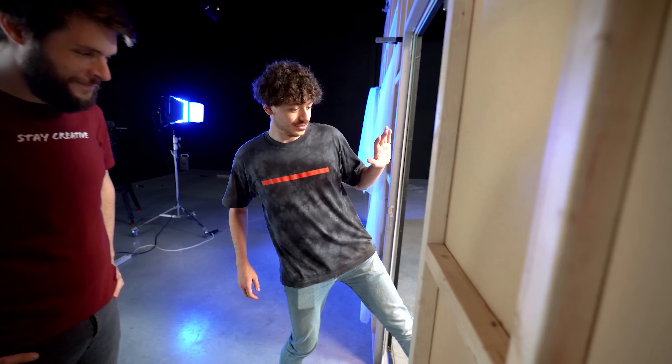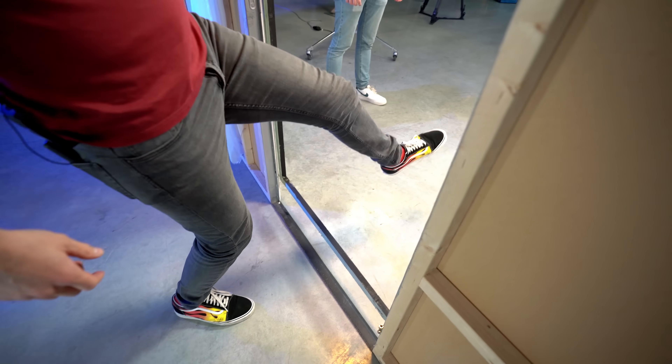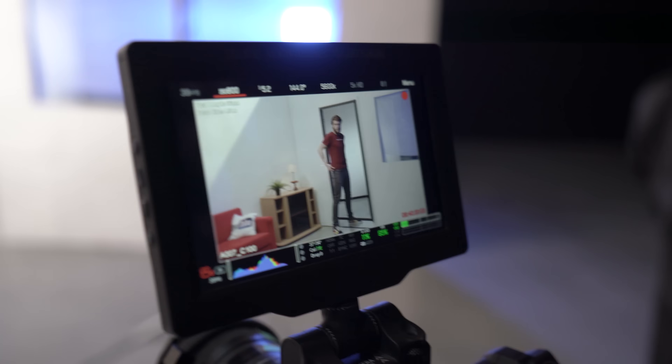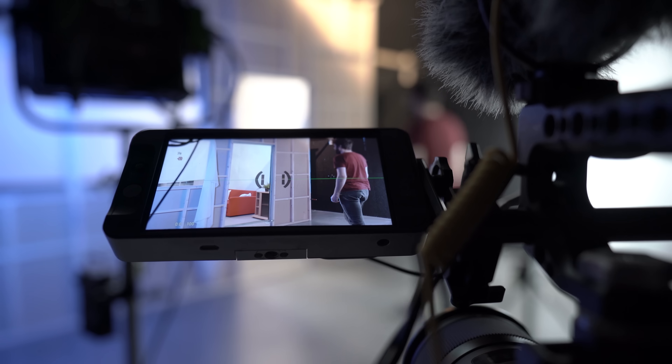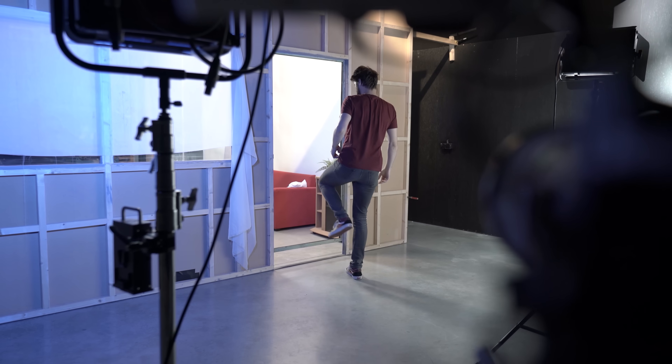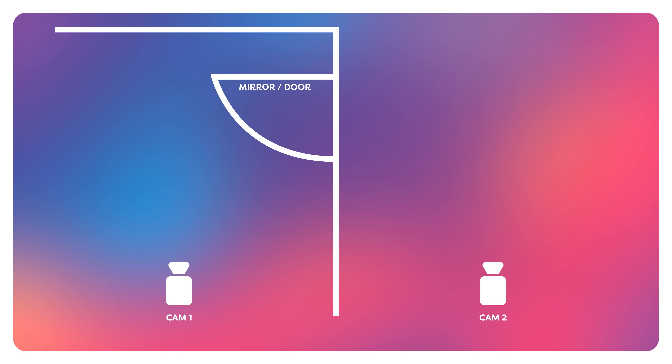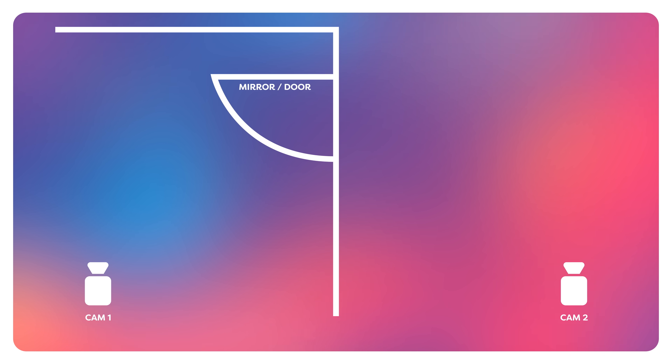The most important thing for shooting this effect is that you have some kind of hole to crawl through. When going through a mirror, you need to go from one side of a wall to another, so that's why we built our own set. And if you can't build your own set, you can just use a door in your house. Ideally, you'll need two cameras — one in the front shooting the main shot and one behind you shooting the reflection shot. When placing both cameras, make sure they have the same distance on either side and the same angle towards the door, because otherwise your footage wouldn't match.